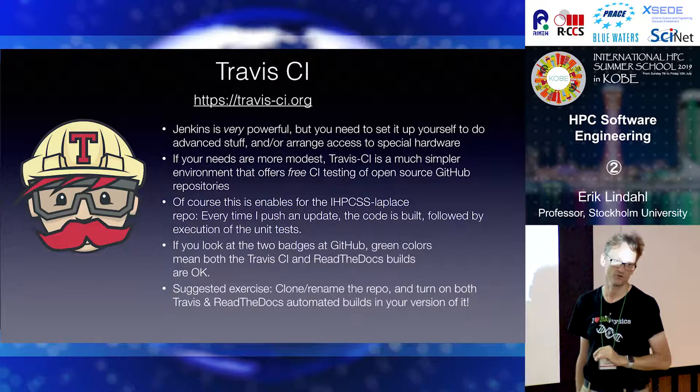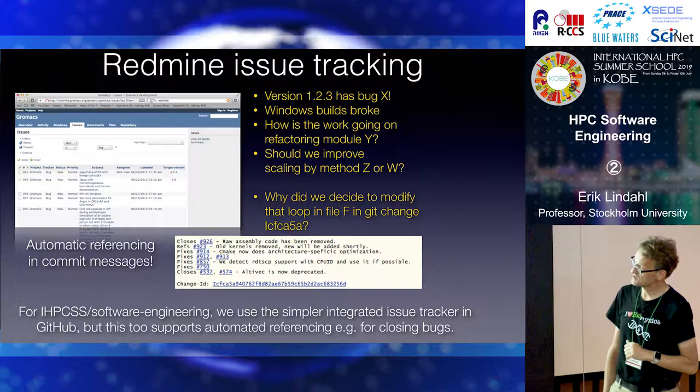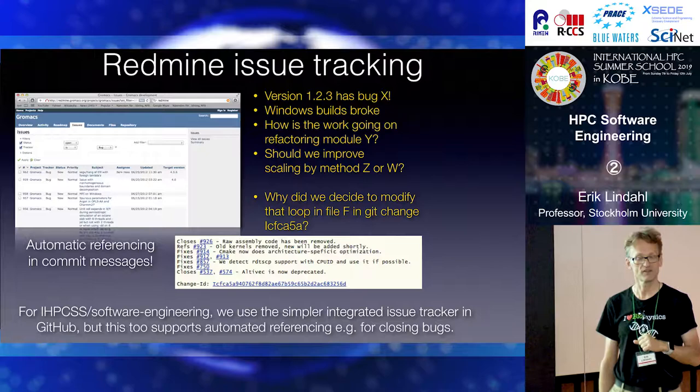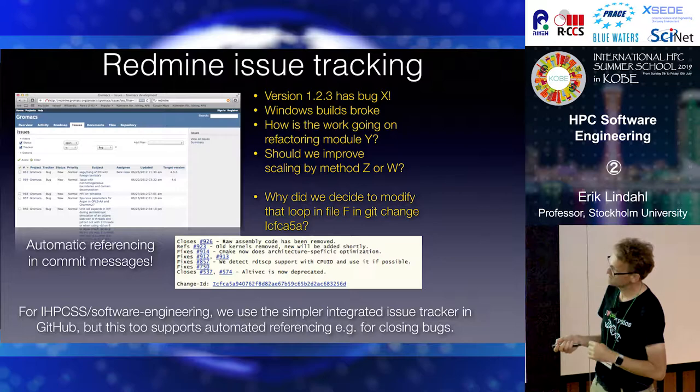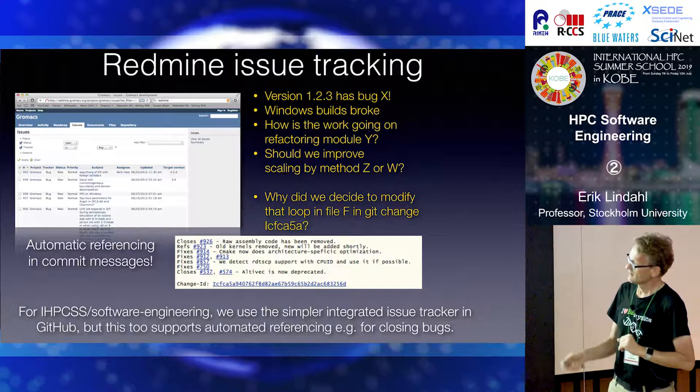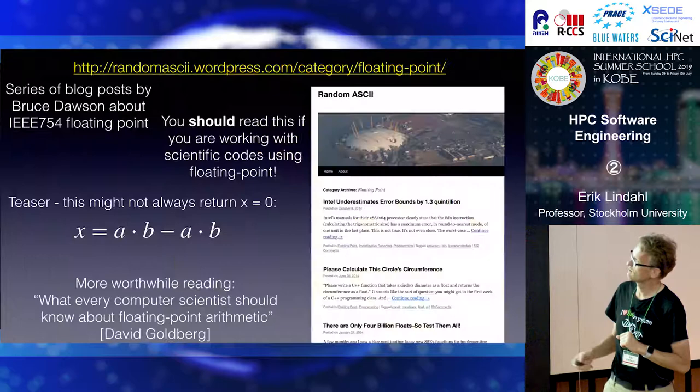Most of these platforms have issue trackers. Even if you don't have a whole lot of external users, I would strongly encourage you to use an issue tracker, because it's also your own to-do list — what needs to be done and in what order. Whenever you upload a change, you can also refer back to particular issues that the change fixes or relates to. That means there are hyperlinks in everything and you can go back and check later. For the example software engineering repository I set up for you, we use the built-in one in GitHub.